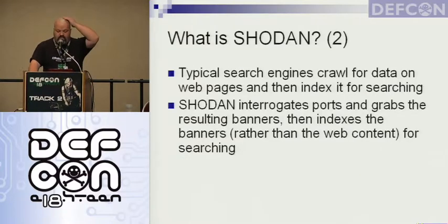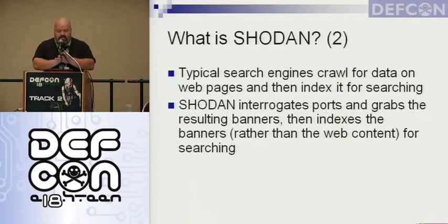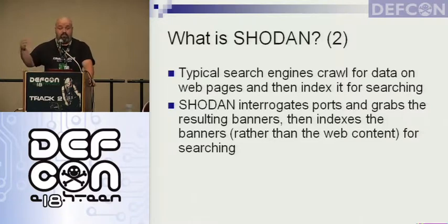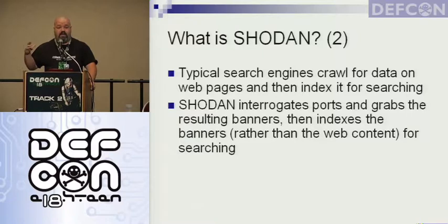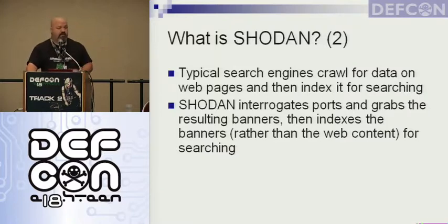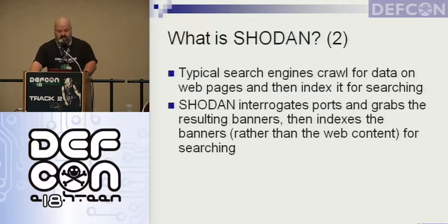Google and similar search engines crawl web pages for data, then index that data and make it searchable. Shodan, on the other hand, interrogates ports — for example, port 80 of a particular server — and it grabs the banner. So we're not talking about the data on the web page; we're talking about the banner: whatever HTTP status code you get, and then the banner details like IIS 5.0 or 6.0, whatever software is running, the version number, et cetera. It indexes the banners rather than the web content — a search engine of banners, not content.